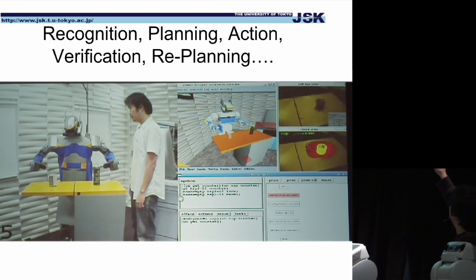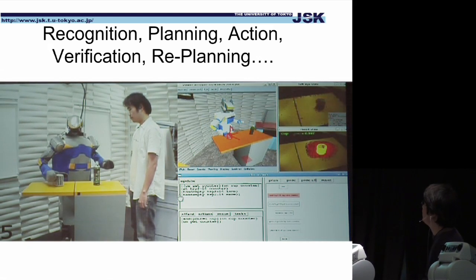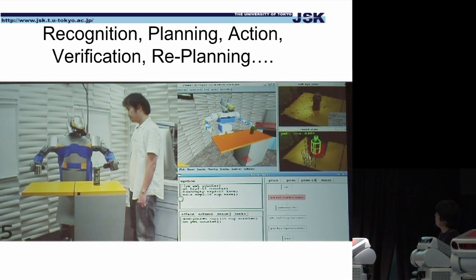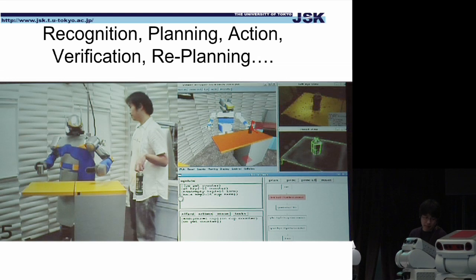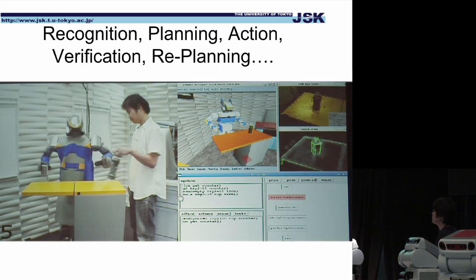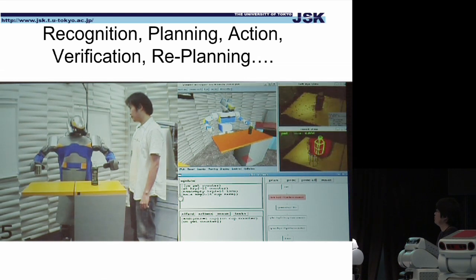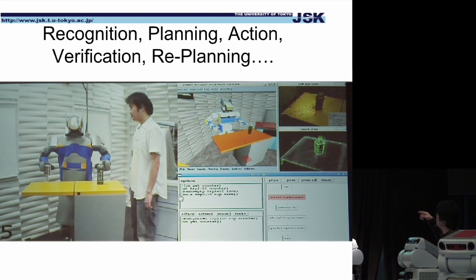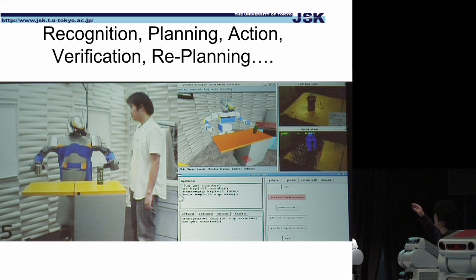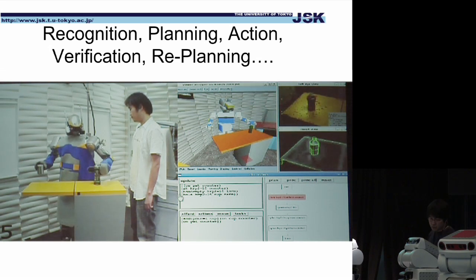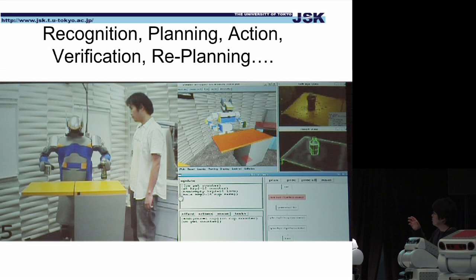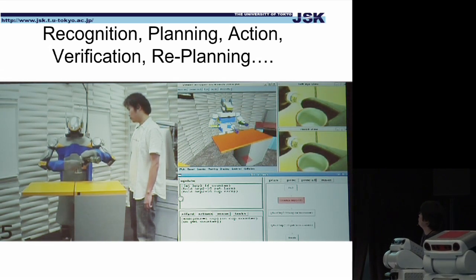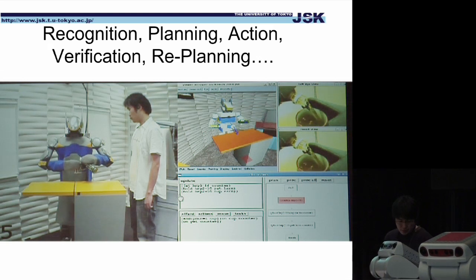The robot sees the position of a cup and tries to grasp it through a PDDL-based planner. We have a vision system and a tactile sensor on the hand, so the robot knows whether the motion succeeded or not. If the robot finds it did not succeed, it replans at the high level and reproduces the motion. This robot is autonomous and tries to do the same thing until it finally succeeds.